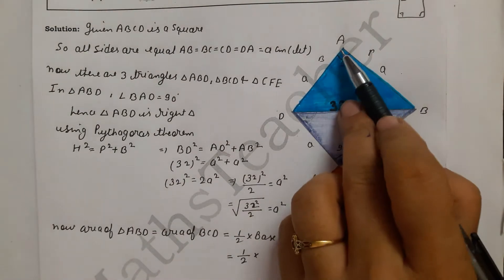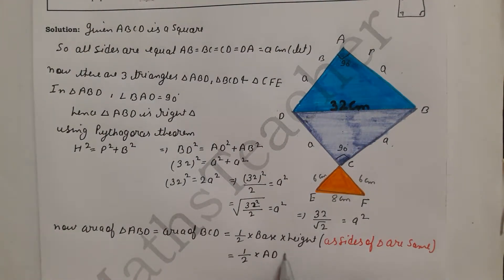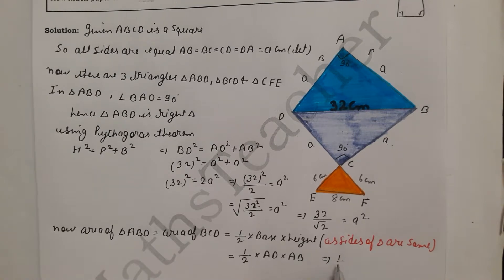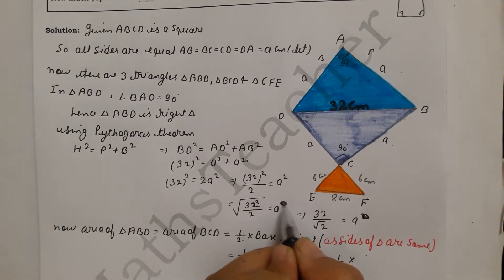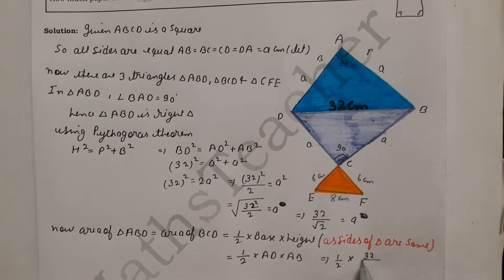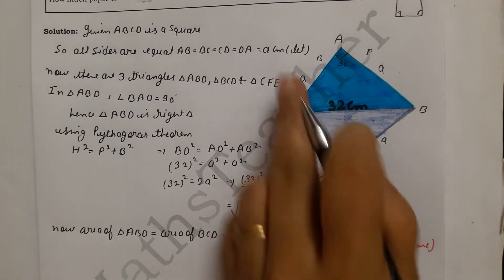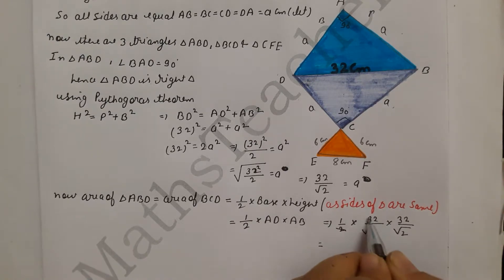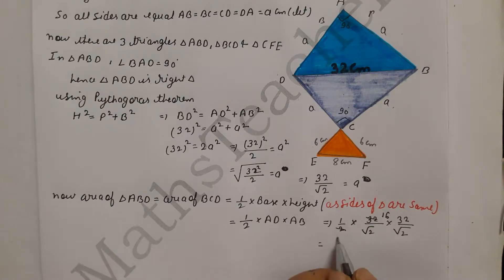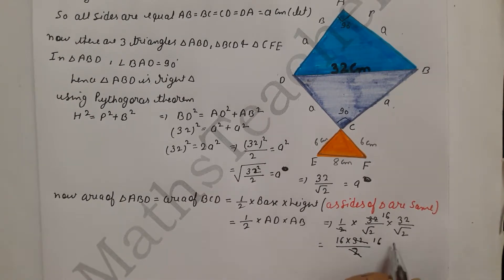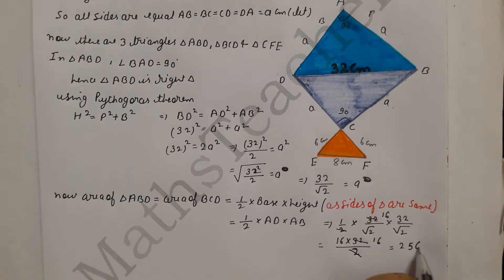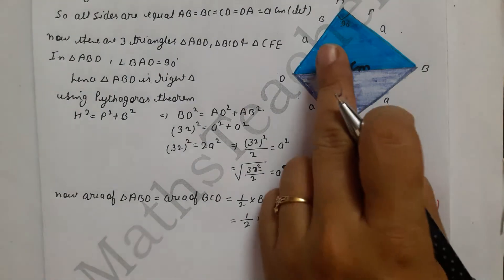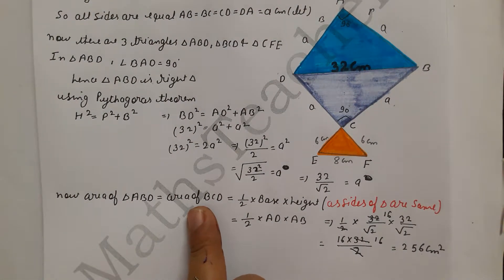Area = ½ × AD × AB = ½ × (32/√2) × (32/√2). Simplifying: ½ × (32 × 32)/(√2 × √2) = ½ × 1024/2 = ½ × 512 = 256 cm². So the area of each of the two shaded triangles in the square is 256 cm².